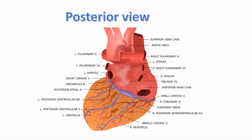Now let's see the posterior view of the heart. Here is the aortic arch. Here is the superior vena cava — remember, this is the posterior view, so what you used to see on the right side you will now see on the left side. We can identify the right pulmonary artery, the left atrium, the right pulmonary veins, the left pulmonary vein, and the left auricle.